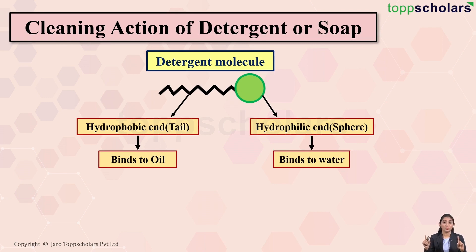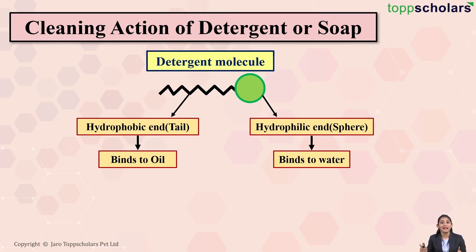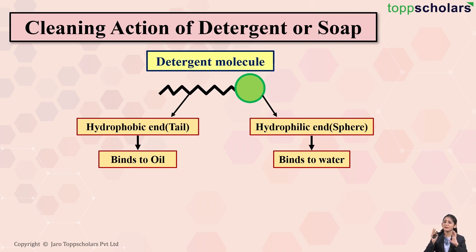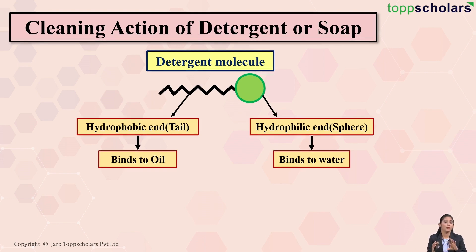Remember: the detergent molecule has two ends with opposite properties. One is the hydrophobic end — the tail — and the other is the hydrophilic end — the head. The hydrophobic end binds to oil whereas the hydrophilic end binds to water. So the detergent molecule has the ability to bind to both oil and water, holding on to both molecules simultaneously.